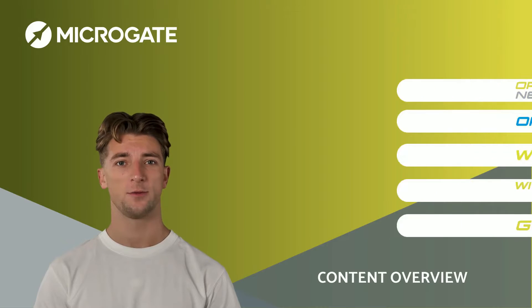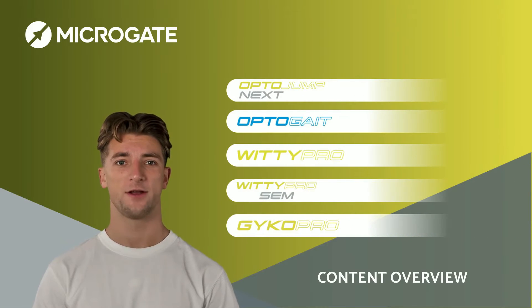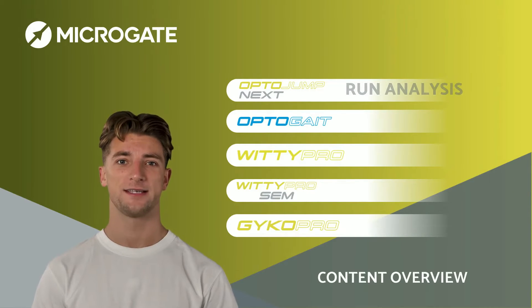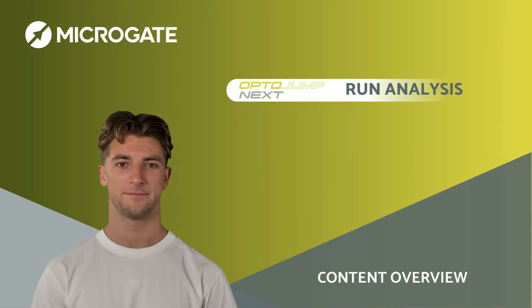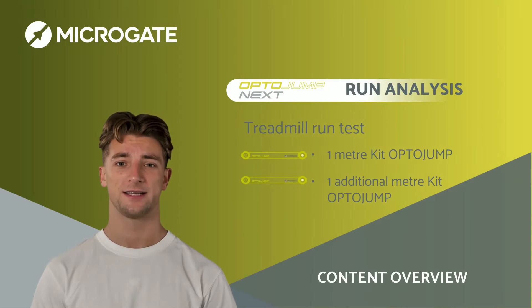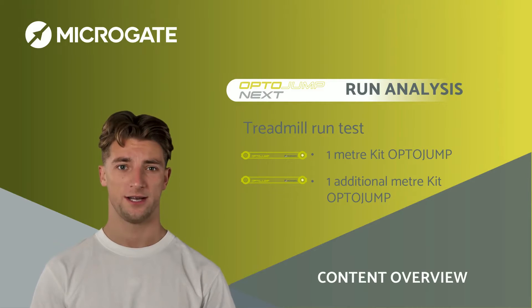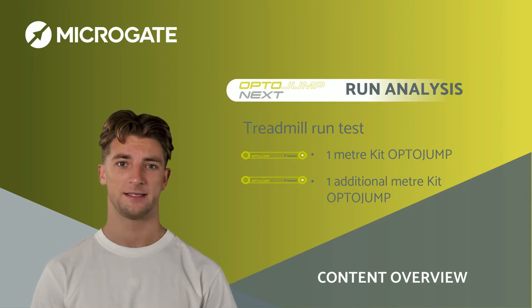In this video, we will see how to perform a run analysis with the opto-jump system. To carry out a test, you will need a single-meter opto-jump and a treadmill. Let's start.